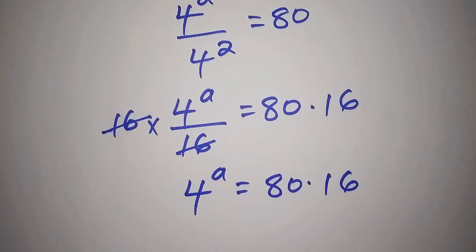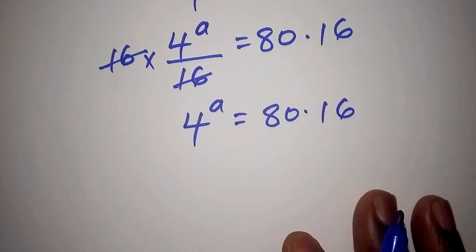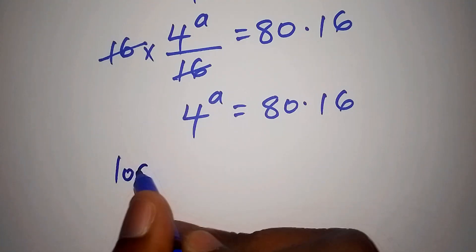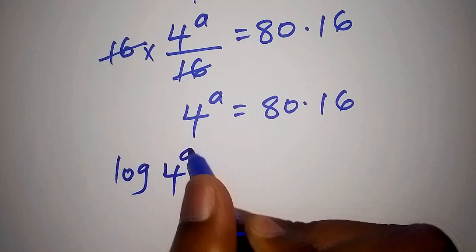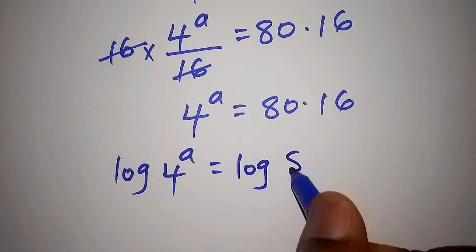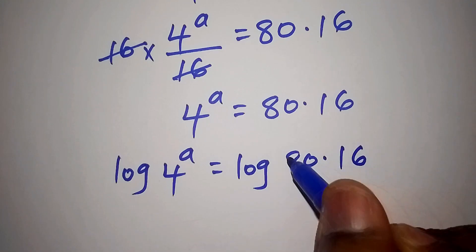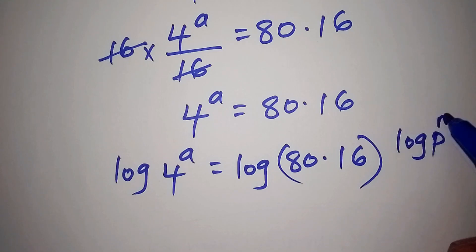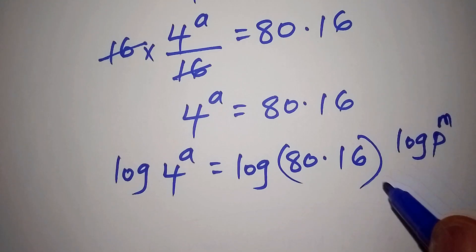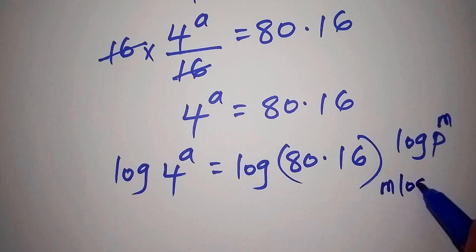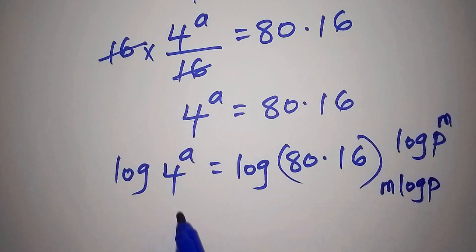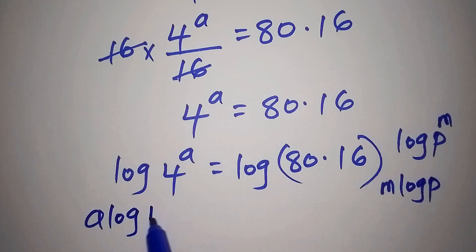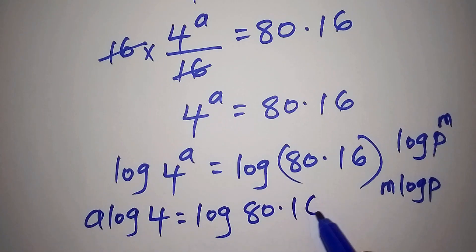The next step is to introduce the log on both sides. So we shall have the log of 4 to the power of a equals the log of 80 multiplied by 16. According to the law of logarithms, the log of p to the power of m can be written as m times the log of p. So the log of 4 to the power of a becomes a times the log of 4, equals the log of 80 multiplied by 16.